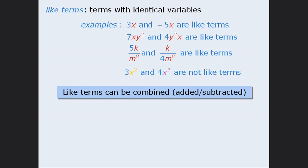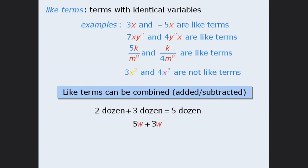An analogy here is the way in which we use the word dozen. Since the word dozen always represents the number 12, we can combine dozens. For example, if we add two dozen and three dozen the result is five dozen. Similarly, since the w in 5w has the same value as the w in 3w, we can combine these two terms to get 8w.